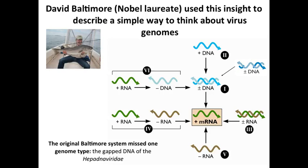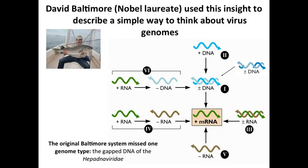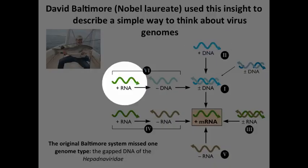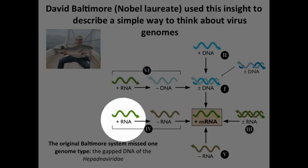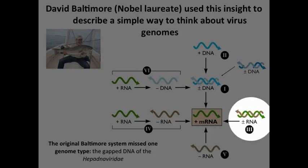David Baltimore, a Nobel laureate for discovering an enzyme we'll discuss in another lecture, used this insight — that every virus has to make mRNA — to organize all the known viral genomes into what is called the Baltimore scheme. He put mRNA in the middle, saying every genome has to lead to this. He then arrayed all known genomes around it in the 1970s: single-stranded DNA, plus-sense RNA going through a DNA intermediate, other plus-stranded RNA viruses, negative-stranded RNA viruses, and double-stranded RNA viruses.